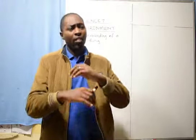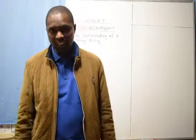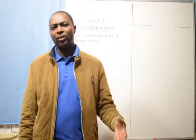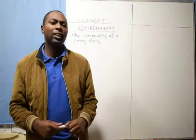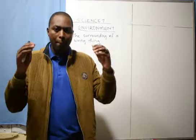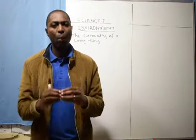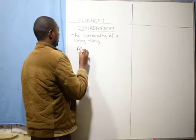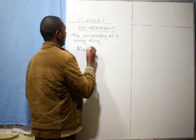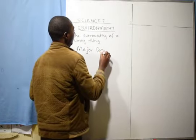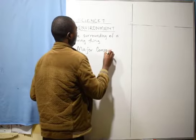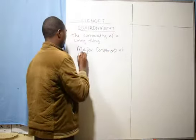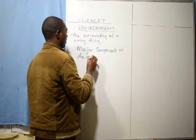Therefore, you can mention thousands of things surrounding a living thing. Some of them are living, others are not living. And therefore, I want to start with what we call the major components of the environment.